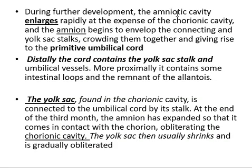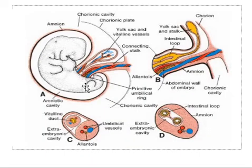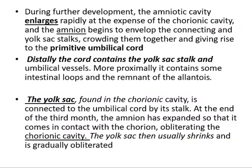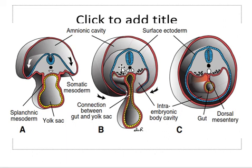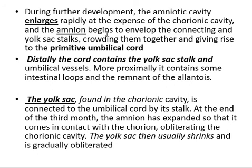During further development, the amniotic cavity enlarges rapidly at the expense of the chorionic cavity. Outer to the amniotic cavity we have the chorionic cavity. The amniotic cavity begins to envelop the connecting stalk and yolk sac, throwing them together and giving rise to the primitive umbilical cord, as we have already read.